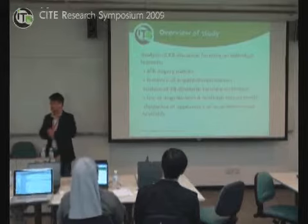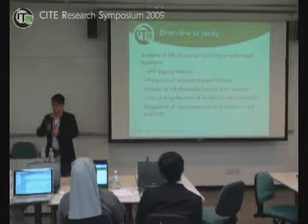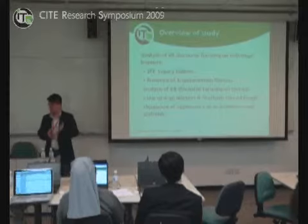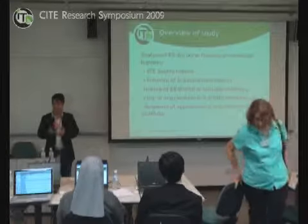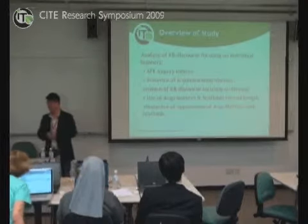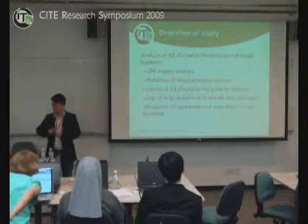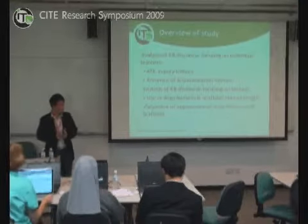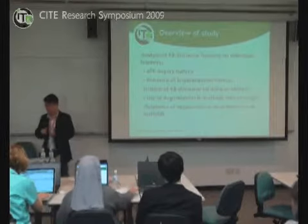There are a number of indicators that we have looked at in this research. First of all, the argumentative markers — whether there are any used, or the number of argumentative markers used. At the same time, we use the ATK Inquiry Index. We will also look at crosstabs between these two indicators and the appearance of argumentative markers in CSCL breadth sequences.